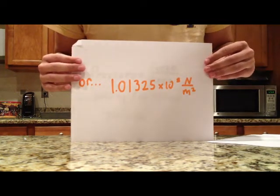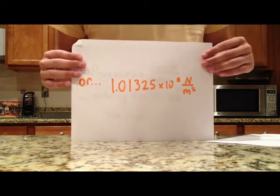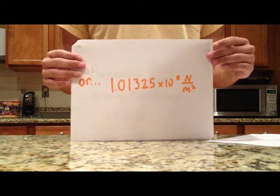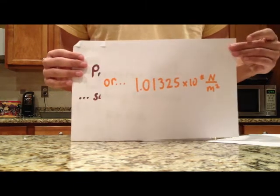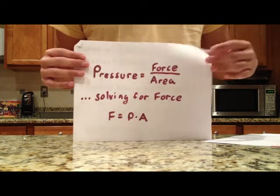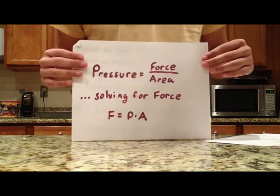So, it is 1.01325 times 10 to the fifth newtons per meter squared. Now, using our relationships between force and pressure, we can see that force over area is equal to pressure, and solving for force, force is equal to pressure times area.